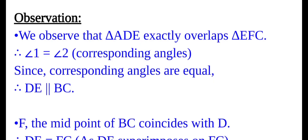Now, observation. We observe that triangle ADE exactly overlaps triangle EFC. We can see that angle 1 is equal to angle 2, and angle 1 and angle 2 are corresponding angles. Since corresponding angles are equal, it means the lines are parallel — that is, DE is parallel to BC.